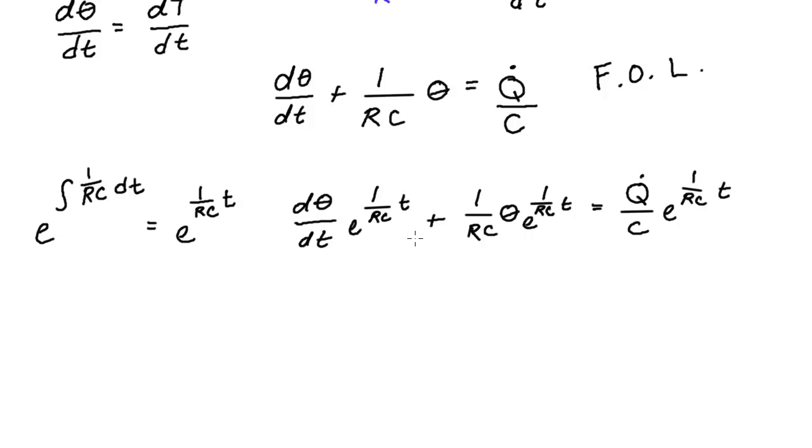Now here's the magic step of first order linear differential equations. This whole side can be reduced to the derivative of two things being multiplied by each other. And this is really an expansion of the product rule. And this would be the derivative of theta multiplied by our integrating factor. And I hope you can see that if you do the product rule with this you'd get this statement out here. And that is still equivalent to q dot over c e to the 1 over rc times time.